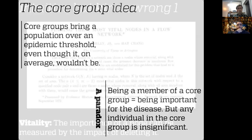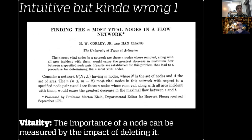This connects to another idea — probably the most reinvented concept in network science — called vitality, especially in network epidemiology. This is the idea that the importance of a node could be measured by the impact of deleting the node. You study the outbreak size with and without the node and measure the difference. You will find that nobody is important — importance cannot be attributed to the impact of individual persons.